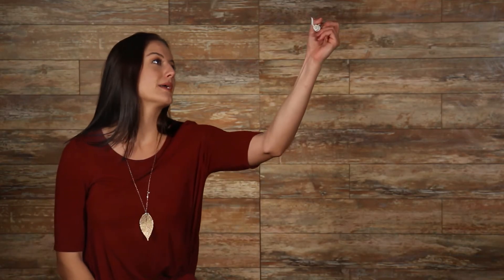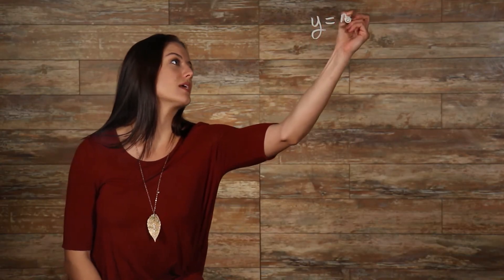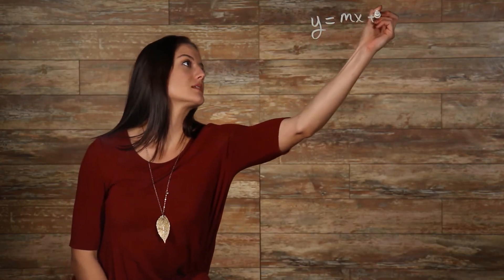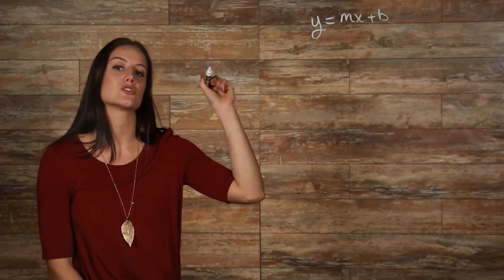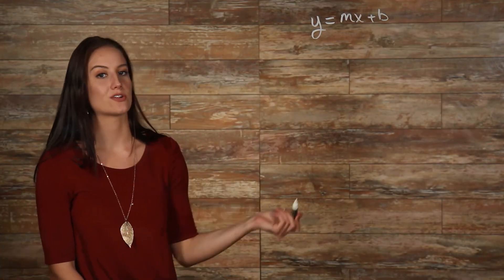I'm assuming that you already know how to find the slope of a line when given the equation of a line. We know that the standard form for the equation of a line is y equals mx plus b, where m is our slope and b is our y-intercept.